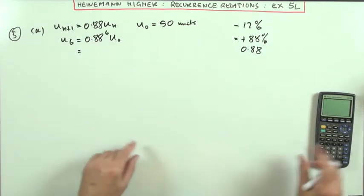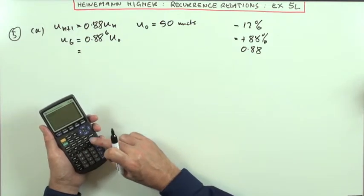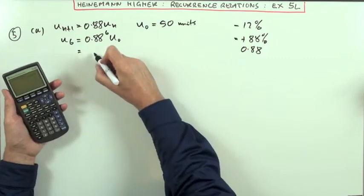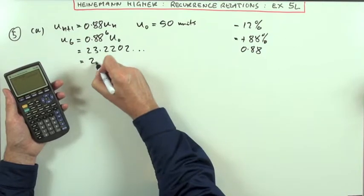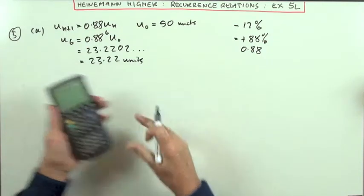So that you've got, if I want the amount, I've got 0.88 to the power 6 times 50, which is going to be 23.2202 etc. I don't know how many decimal places I want. I'll say 23.22 units.